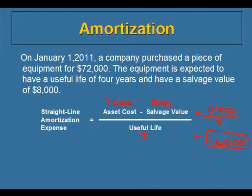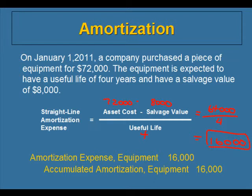When we record that number in the books of the company, we're going to use two brand new accounts. We're going to debit amortization expense for the equipment for $16,000, and we're going to credit the accumulated amortization account for the equipment for $16,000. The first account is an expense account — a cost of producing revenue — representing how much the piece of equipment has declined in usefulness for that year. The accumulated amortization account is called a contra-asset account. This means that this account is an asset, but it doesn't have a debit balance; it has a credit balance. This account is used to accumulate all of the amortization taken on this piece of equipment since it was purchased.